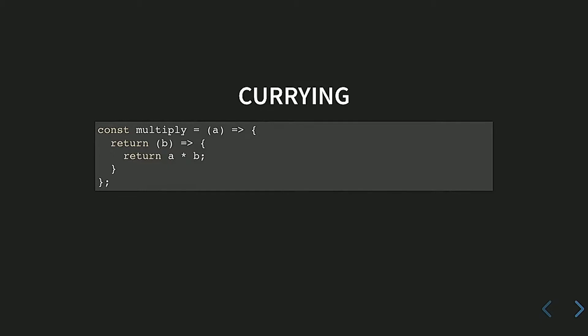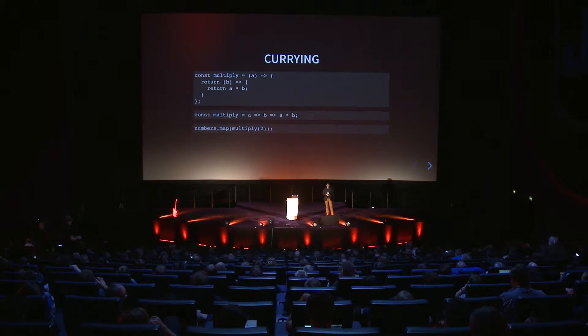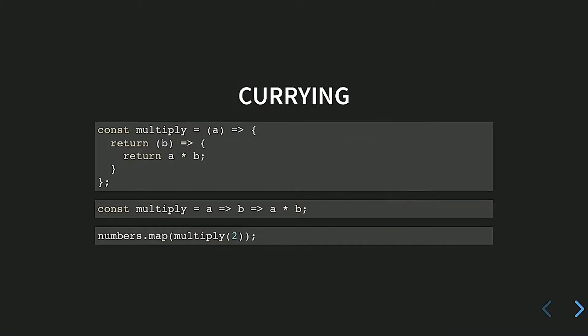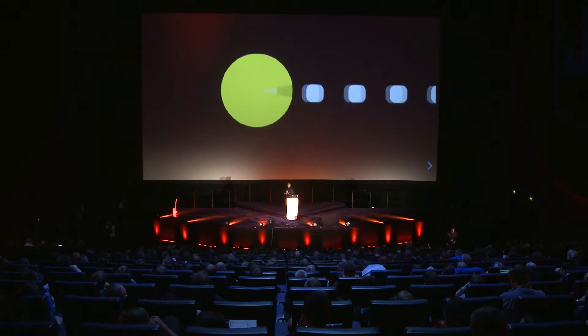So multiply becomes a function that takes a single argument and returns a new function waiting for the second argument, evaluating only once it gets both. We can also write it more concisely with arrow functions. This lets us do things like partially apply multiply with 2 to get a doubling function — turning this code into point-free style. My intuition for partial application is that a curried function is like Pac-Man eating arguments one by one, only evaluating when it has consumed all of them.